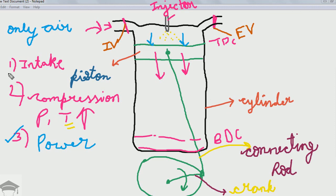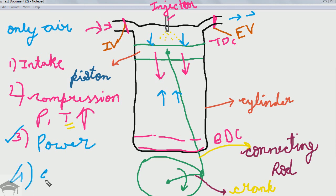The last stroke is the exhaust stroke, to remove the burnt gases through the exhaust valve. The piston moves from BDC to TDC again, pushing the burnt gases out. The exhaust valve opens and all burnt gases escape via the exhaust valve. The exhaust stroke is necessary because if the burnt gases are not removed, during the next cycle the fresh air will be diluted, reducing combustion efficiency and the overall engine efficiency.